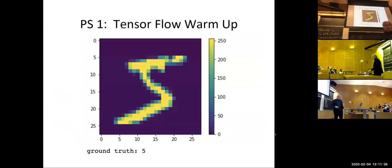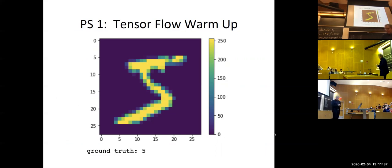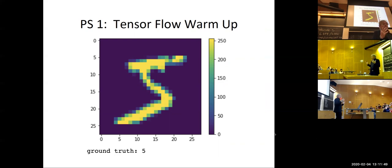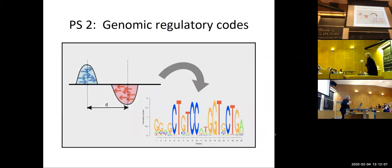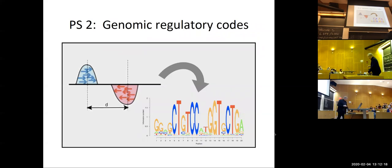The first problem set is a TensorFlow warm-up where we give you a series of MNIST digits and ask you to classify them — a fairly straightforward problem set, maybe 40 lines of code, but it will get you into the environment and help you appreciate TensorFlow. The next module on gene regulation includes a problem set using deep learning to explore the binding of transcription factors to the genome, which participate in regulating gene expression. We'll give you high-throughput sequencing data from ChIP-seq experiments and you'll interpret models to find the DNA sequences those factors recognize.